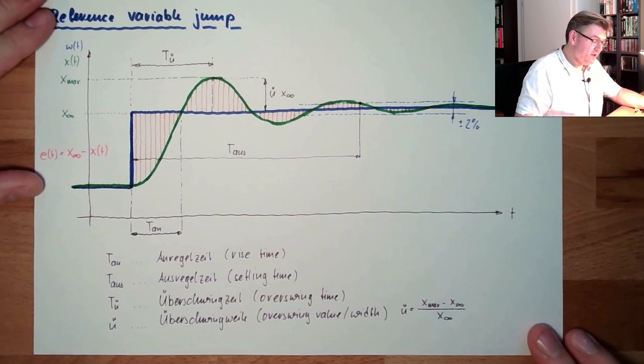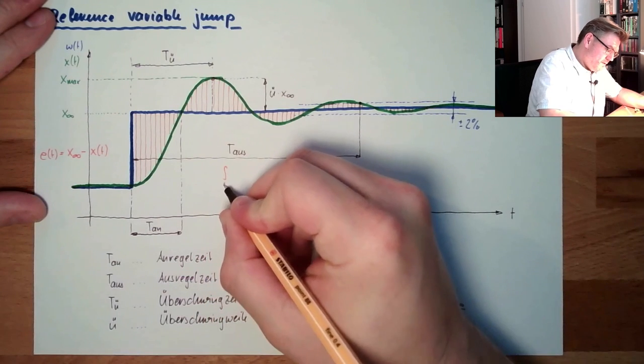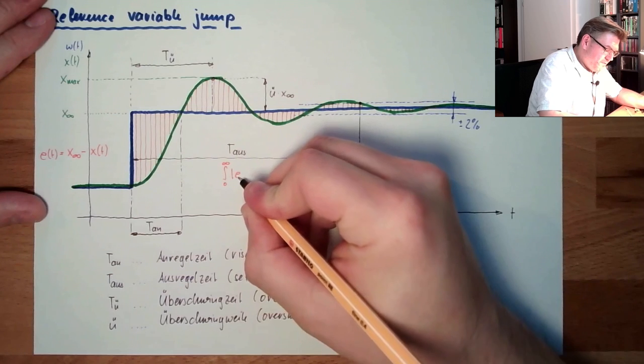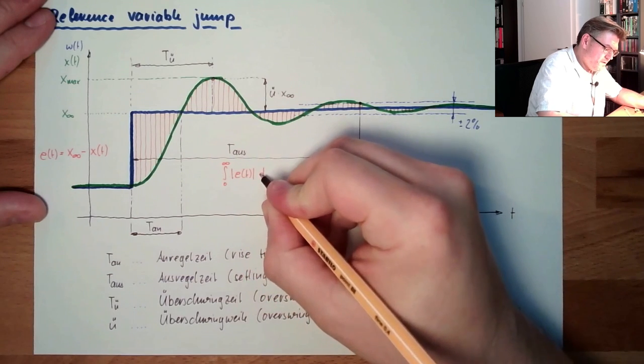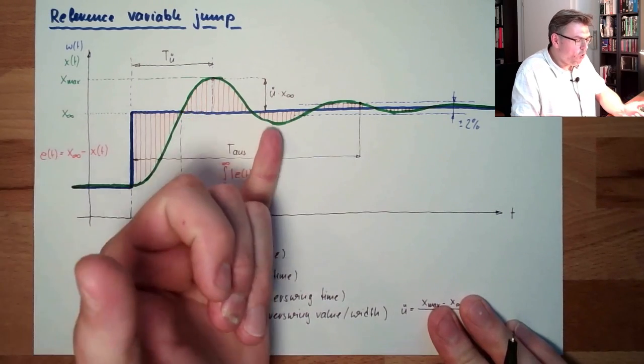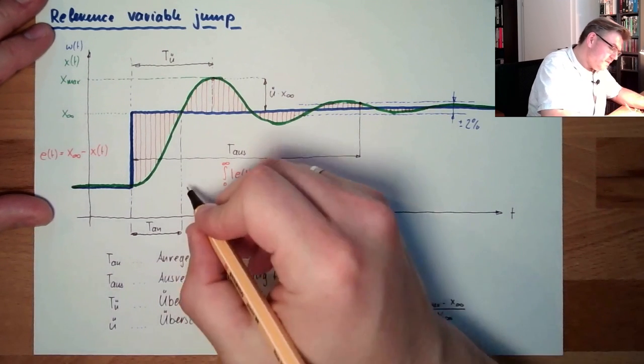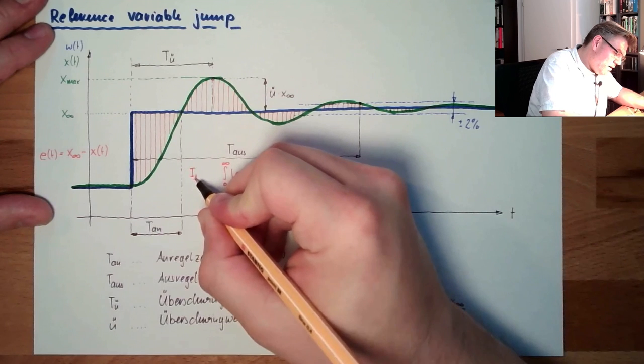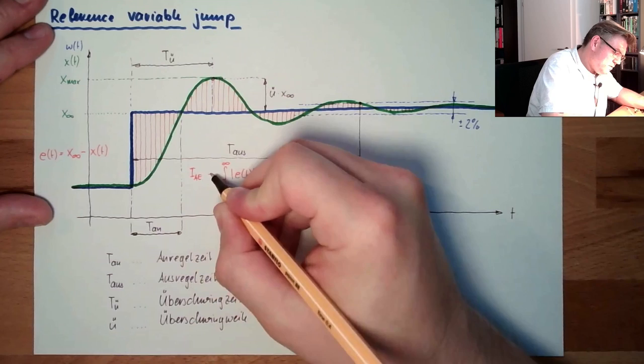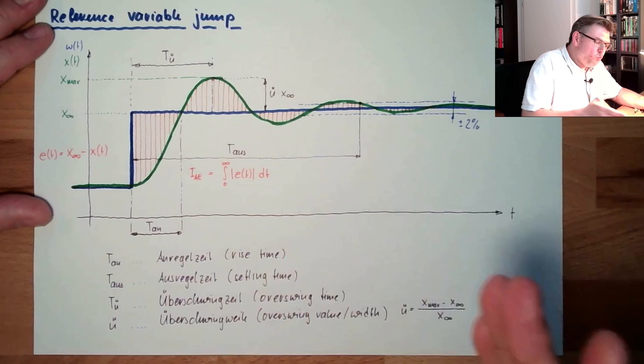One quality criteria is not to sum up the error, but to sum up from zero to unlimited, sum up the absolute value of the error. This is a good idea, because then I would summarize simply all those areas. And that's it. This is called integral of absolute errors.